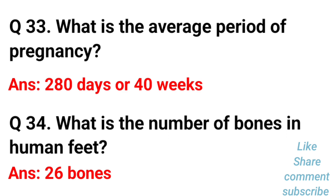What is the average period of pregnancy? The average period of pregnancy is 280 days or 40 weeks. What is the number of bones in the human feet? The number of bones in the human feet is 26.